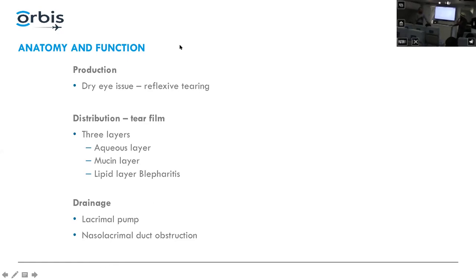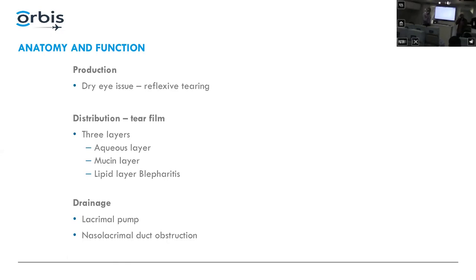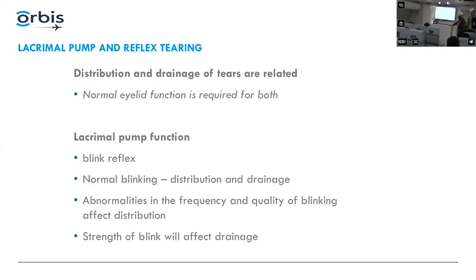You should never forget that production and distribution can also cause tearing. The most obvious cause is blockage of drainage — the most common being nasal lacrimal duct obstruction. Also consider the lacrimal pump: as we blink, the orbicularis contracts, squeezes the lacrimal pump, and creates pressure that sucks tears into the system. If anything is wrong with the eyelid blink or orbicularis, that will cause tearing.